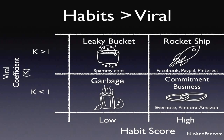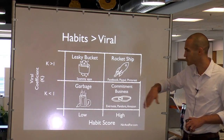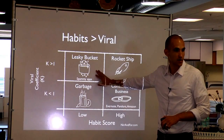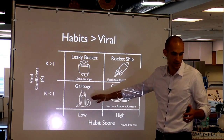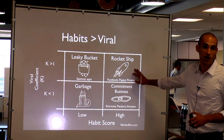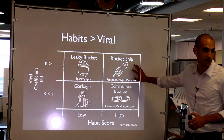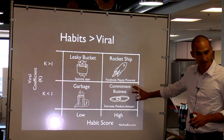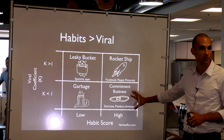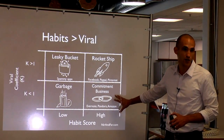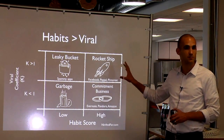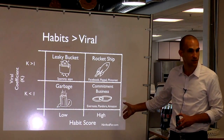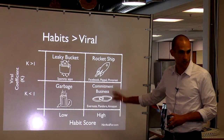This is a two-by-two comparing virality with the habit potential of a product. We've all seen what happens when a company has a high viral score — these are the leaky bucket businesses of 2007 that got big fast through Facebook apps and then cratered. Growth is not enough; if you can't retain and engage users, growth means nothing. Every decade or so you find a rocket ship business that both grows fast and is highly engaging, with a high habit score like Pinterest or Facebook. Even without high growth rates, you can still get big slow — I call these commitment businesses, like Evernote, Pandora, and Amazon.